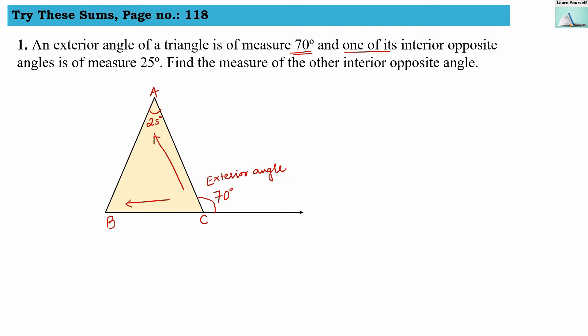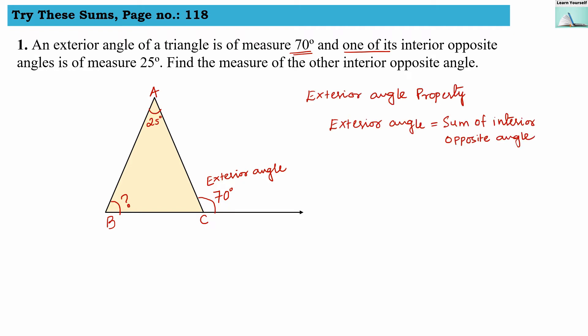We have to find the measure of the other interior opposite angle, which is angle B. As per the exterior angle property, the exterior angle's measure is equal to the sum of the interior opposite angles.